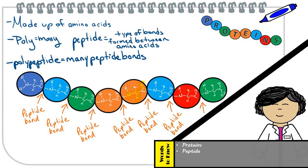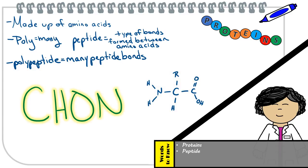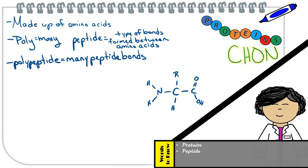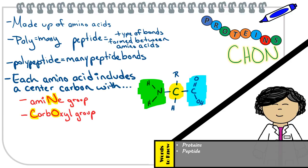Each amino acid shares a common structure, which consists of four essential elements: carbon, hydrogen, oxygen, and nitrogen. The best way to recognize an amino acid is by looking for the four major groups surrounding a center carbon: an amine group, carboxyl group, hydrogen, and an R group. The amine group is the side that has a nitrogen, and the carboxyl group is the side that has COOH.